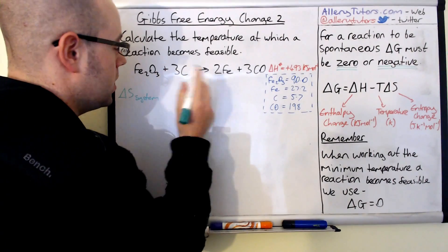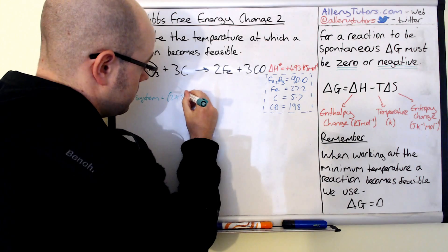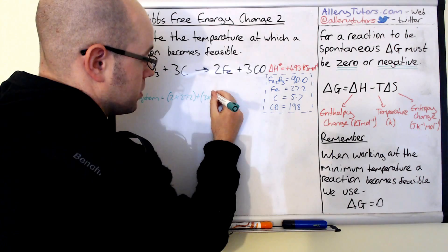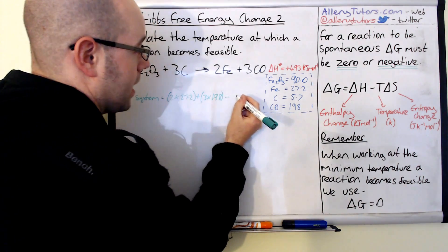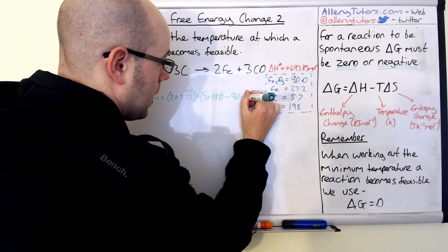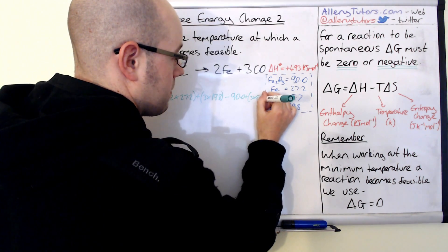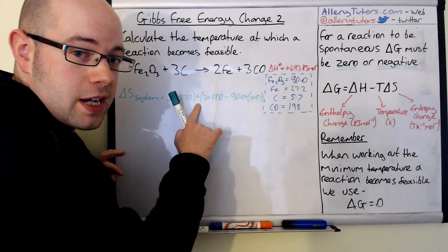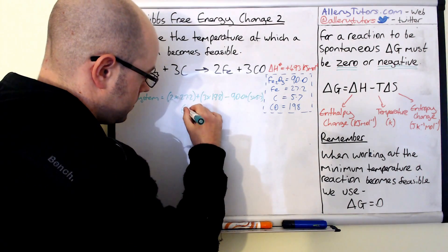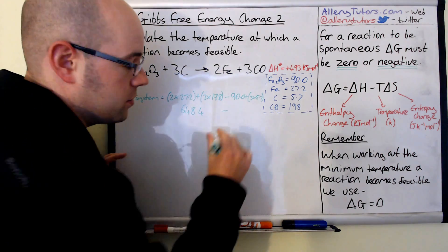Delta S of the system is your product minus reactants. Delta S of the system is going to be 2 times iron 27.2, and we're going to add that to 3 lots of carbon monoxide, which is 198. We're going to subtract that away from iron oxide, which is just 90, and we're going to subtract it from 3 lots of carbon, which is 3 times by 5.7. If we do this side here, this equation on the left first, then we should get a value of 648.4. And then if we look on this side and add them up, then we should get a value of 107.1.